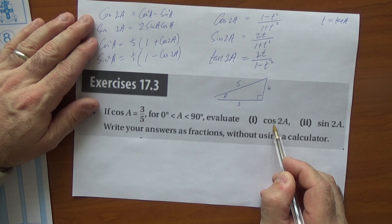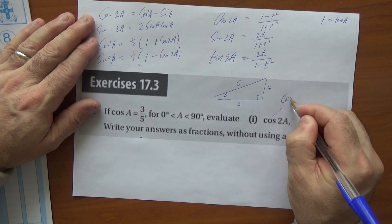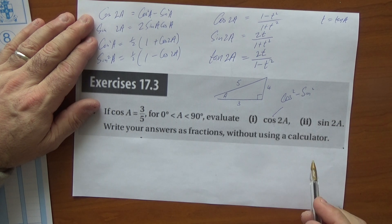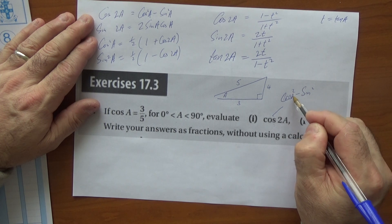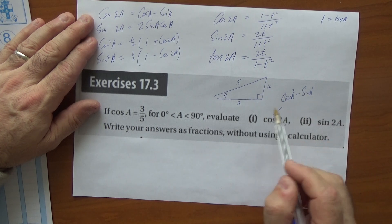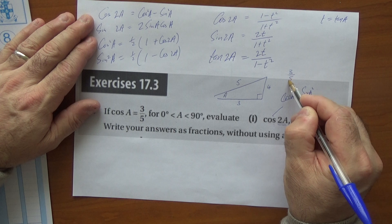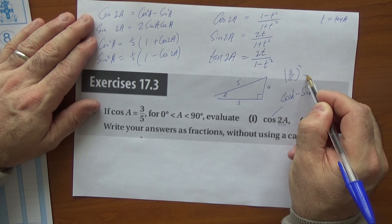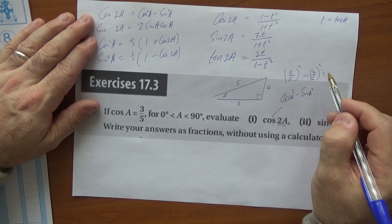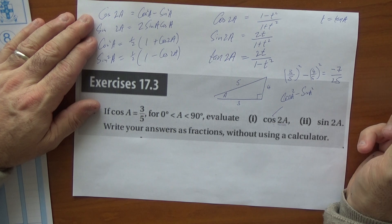Using cos(2a) = cos²(a) - sin²(a): cos(a) = 3/5, so cos²(a) = (3/5)² = 9/25. Sine(a) = 4/5, so sin²(a) = 16/25. Therefore cos(2a) = 9/25 - 16/25 = -7/25.